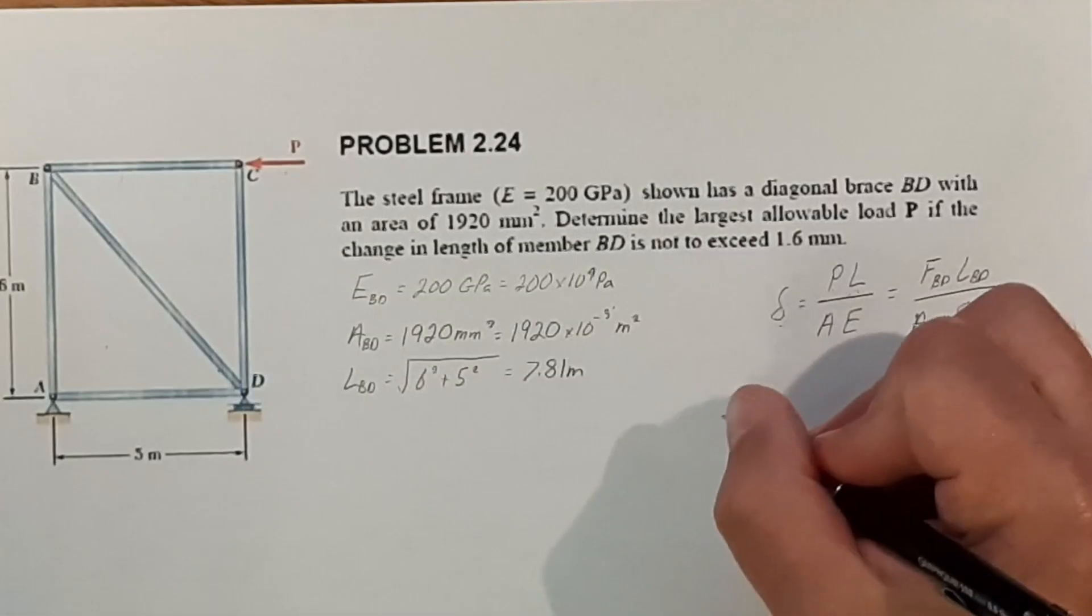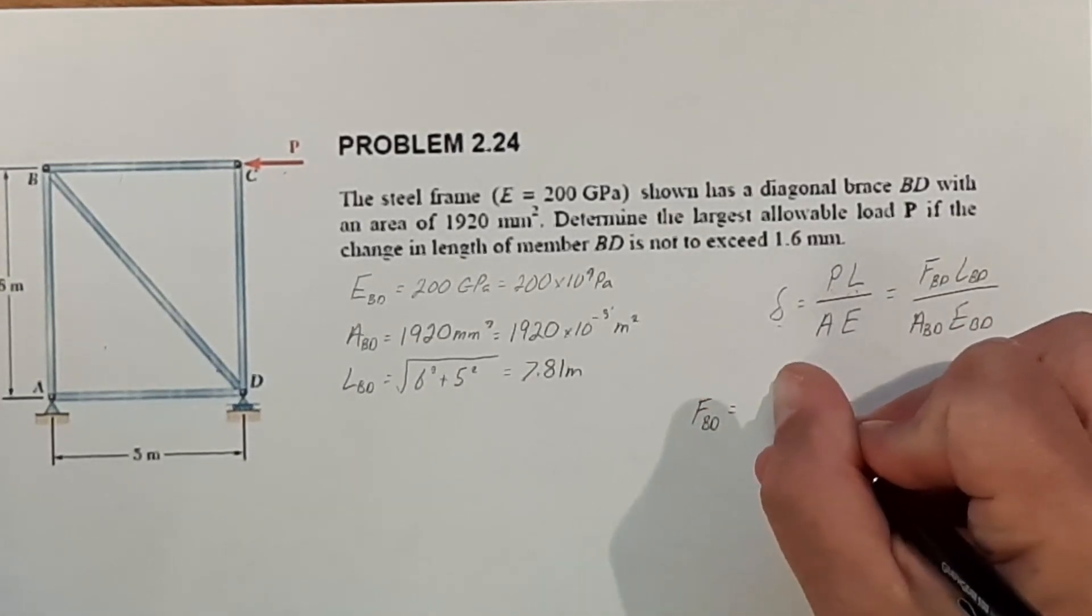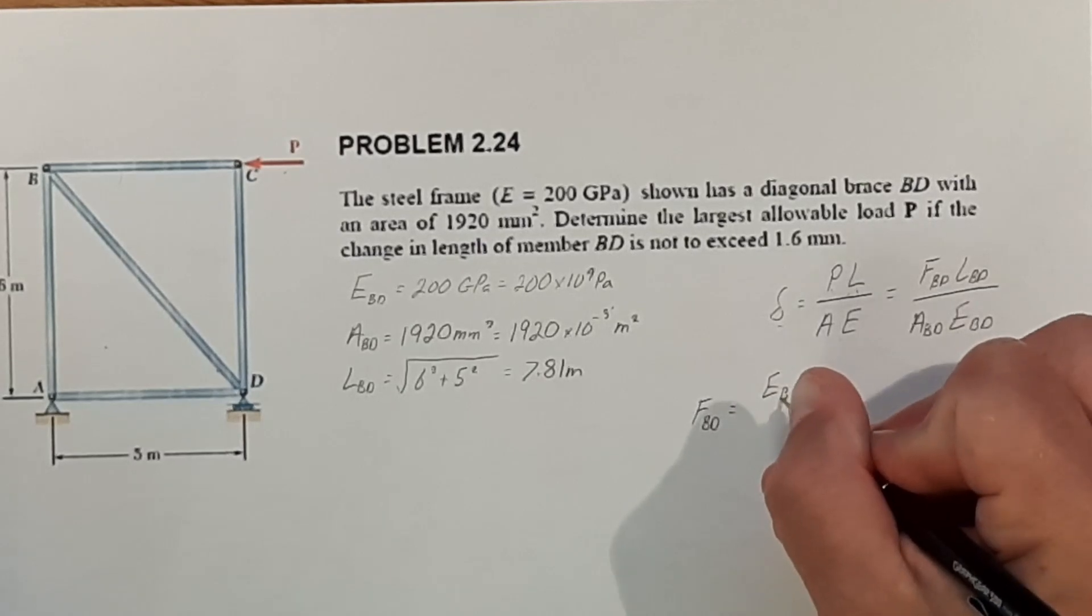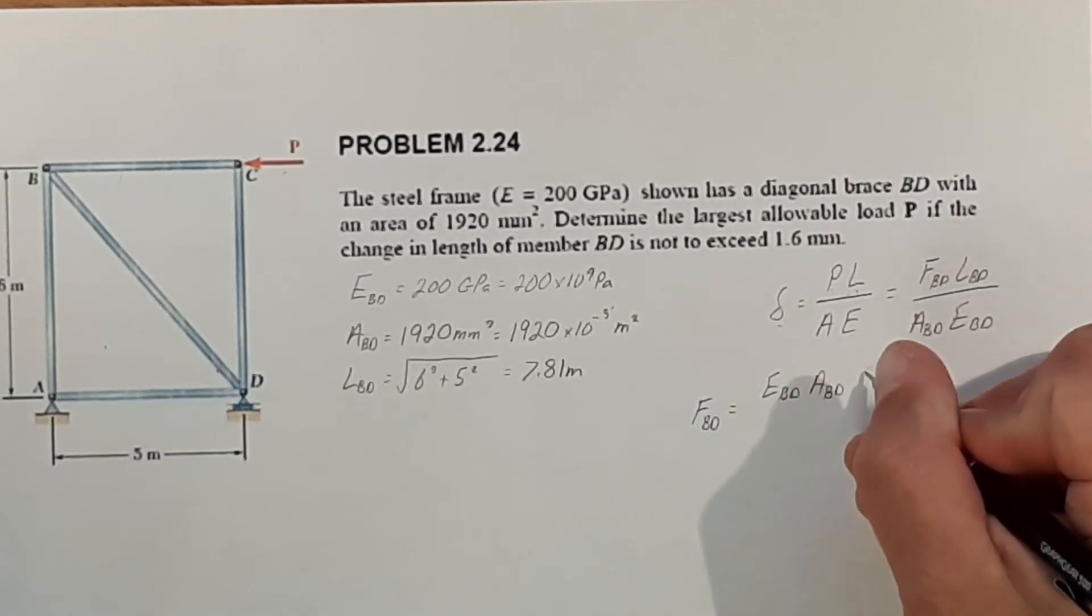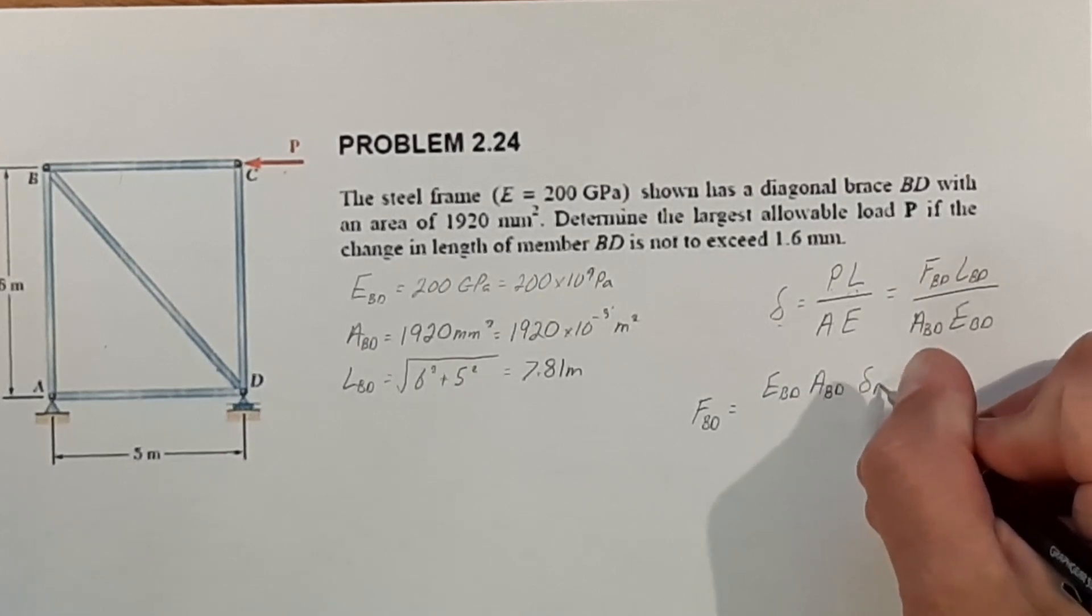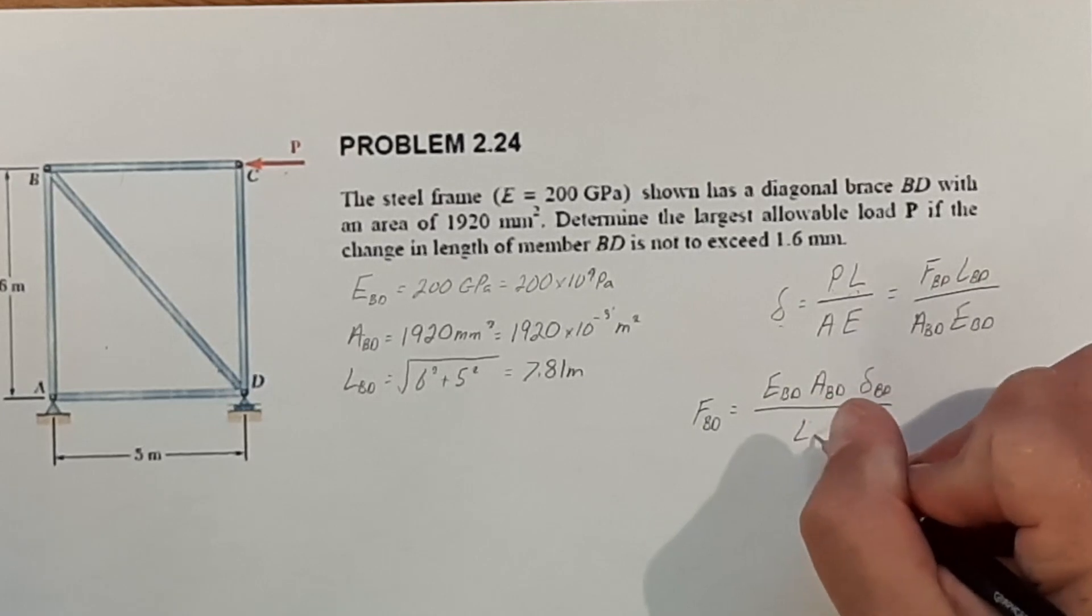So rearranging this, we'll get F of BD is equal to E of BD times A of BD times the change in length of BD over the length of BD.